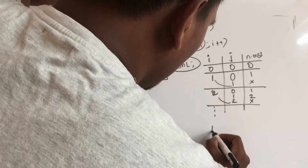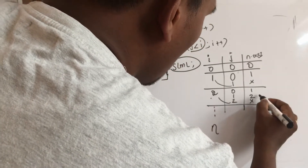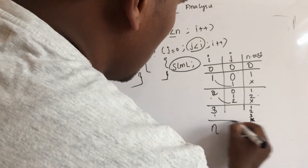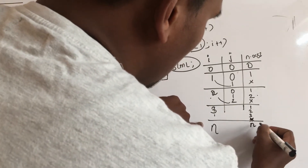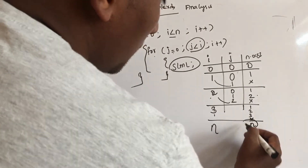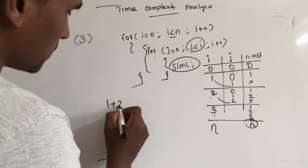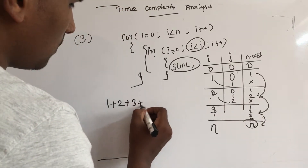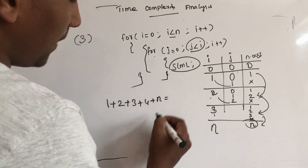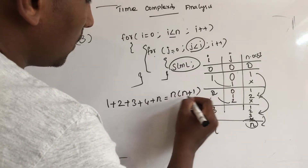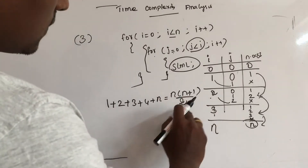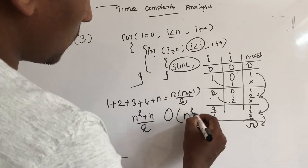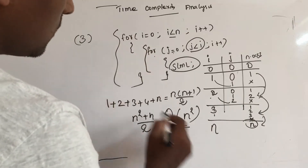So the inner loop executes: i=1 executes 1 time, i=2 executes 2 times, i=3 executes 3 times, i=4 executes 4 times, and i=n executes n times. So the total is 1 plus 2 plus 3 plus 4 plus... plus n. The mathematical representation gives n(n+1)/2, which simplifies to n squared plus n divided by 2. The order of the higher term is n squared — this is the Big O time complexity of order n squared.